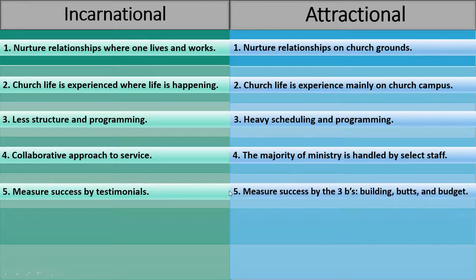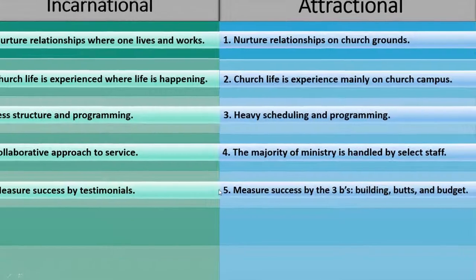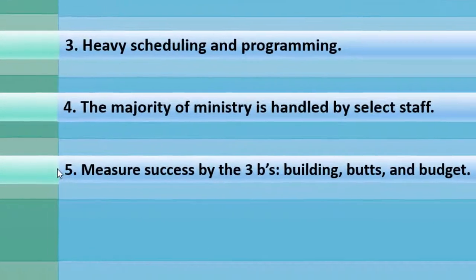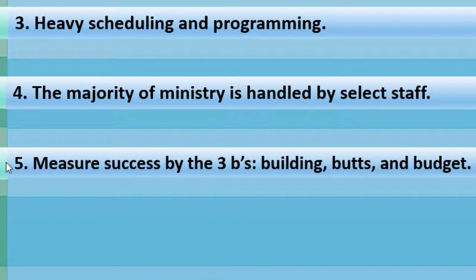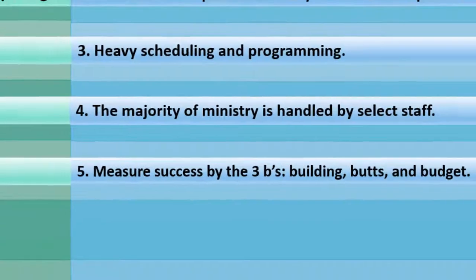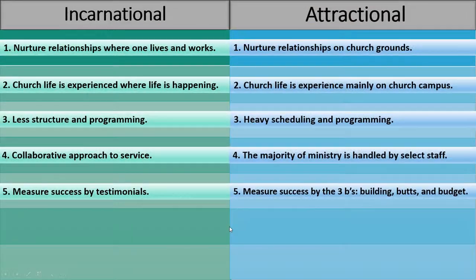Number five for attractional: measure success by the three B's — building, budget, and butts. Attendance is a priority since through tithes and offerings, bills can be paid including payroll for professional staff, building maintenance, events and programs, and the rest of the costs associated with keeping the church attractive to outsiders. Finances are crucial to keep all the various activities and services running. As attendance increases, expansion is required to accommodate growth, which requires additional funding.